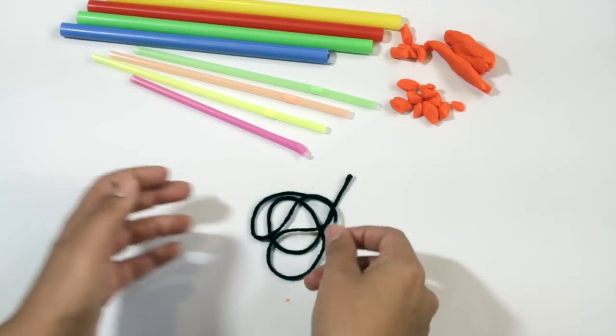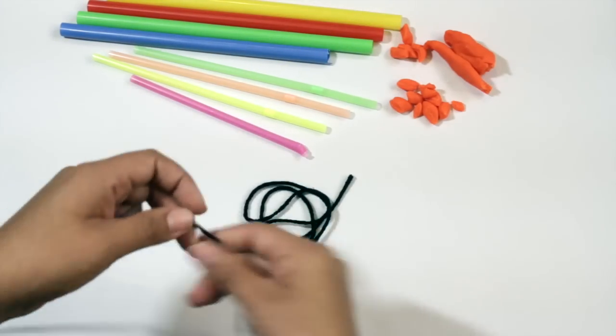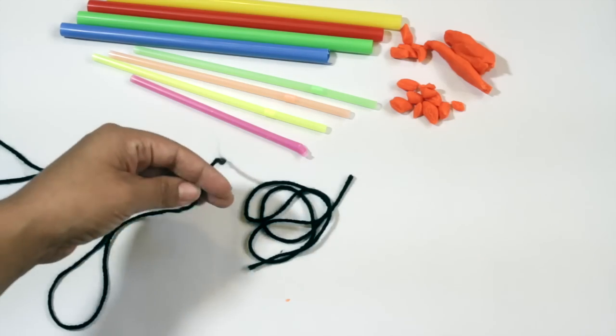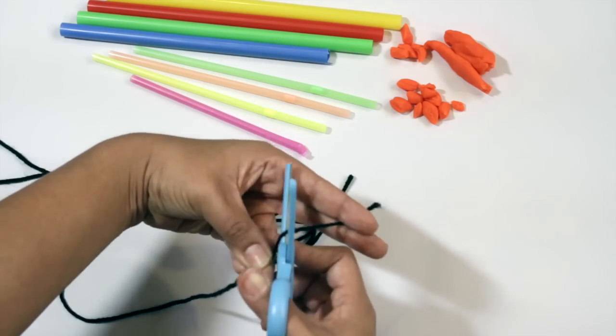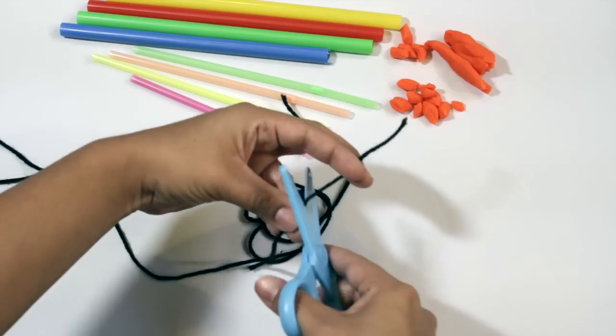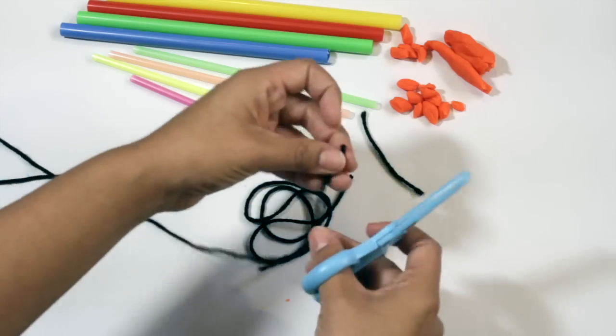Another way you can practice your cutting is to use something such as yarn. You can get all kinds of different colors from the craft store and once again learning how to cut the yarn. And it's just cutting it in little strips.